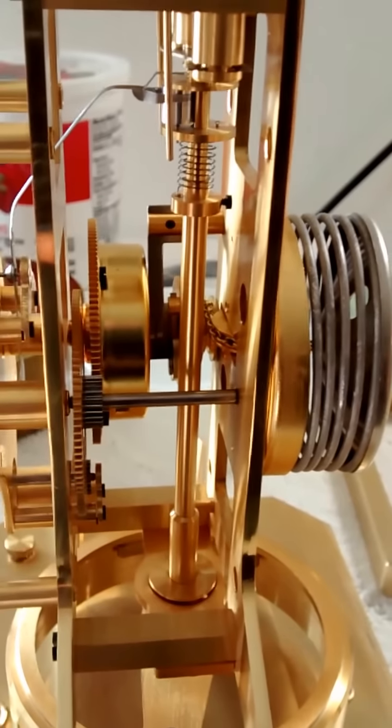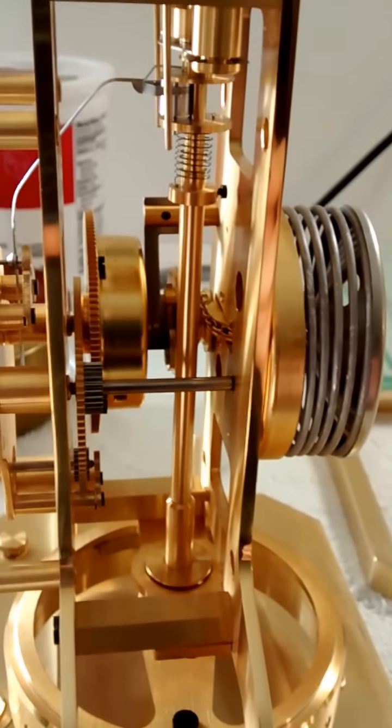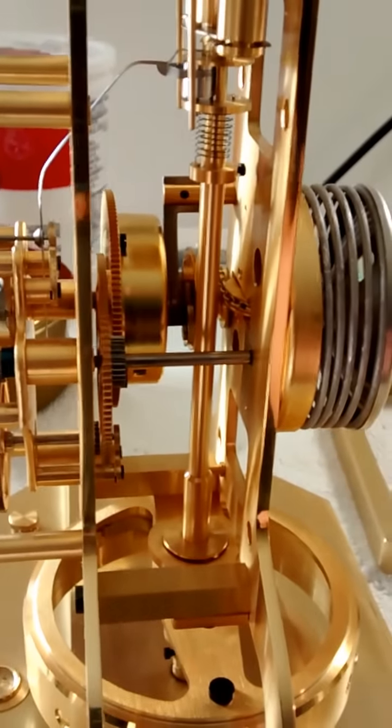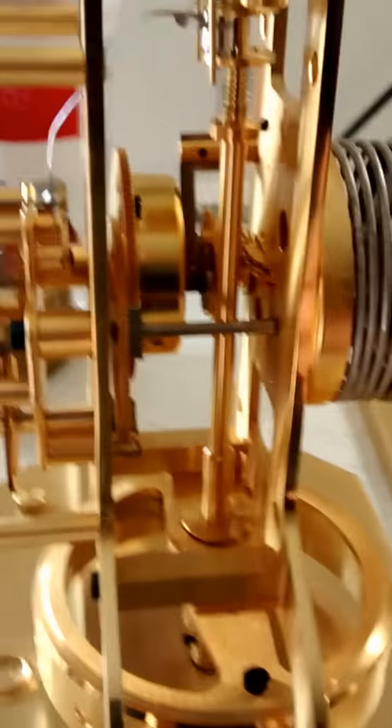And then it twists and untwists. And you don't want to over-twist it, because once you put a kink in that wire, it can't properly twist and untwist.